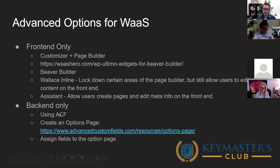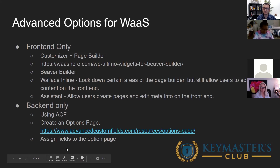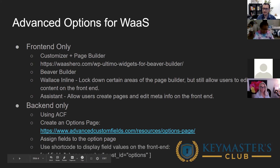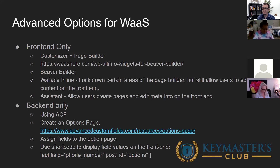ACF fields are typically attached to posts and pages, but the ACF Pro options page allows you to create standalone fields on their own dashboard screen. That's where you gather information like business name, social media links, business address, and phone number — things you want to populate on the front end without giving customers front-end access. You create fields as normal in ACF, assign them to the options page, and then use an ACF shortcode to display any ACF field on the front end. The post ID in the shortcode would be the options page, and you place it anywhere on the front end.